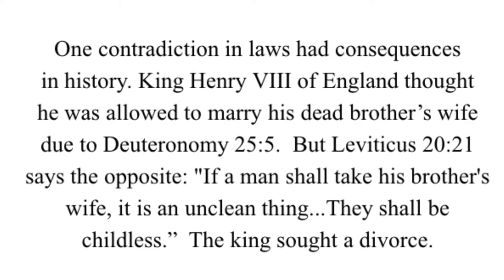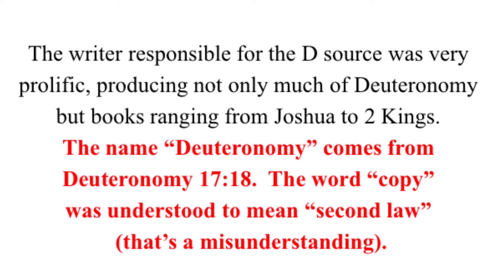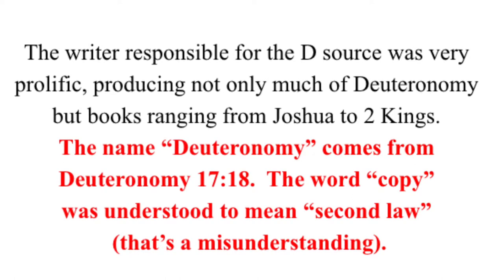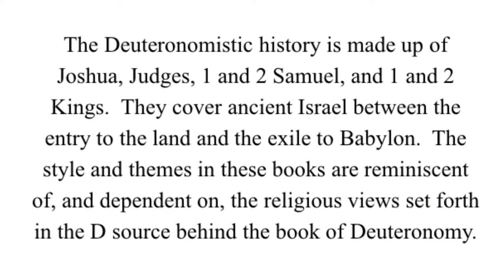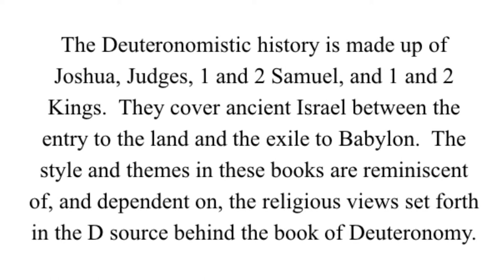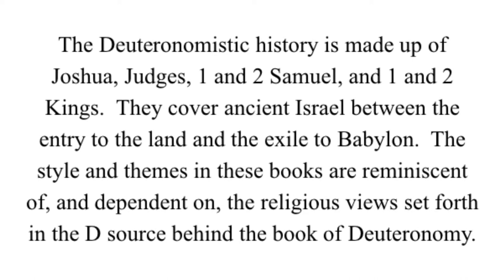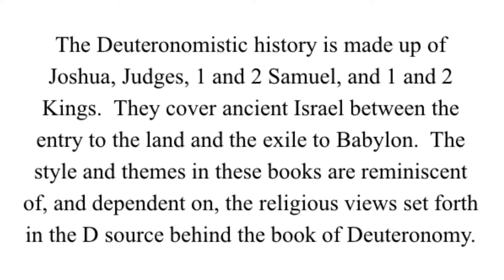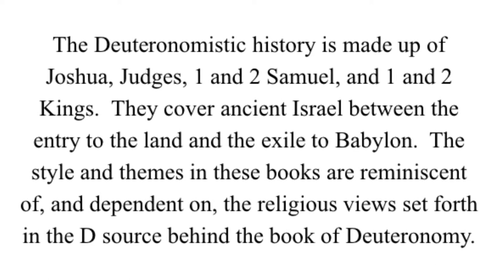The writer responsible for the D source was very prolific, producing not only much of Deuteronomy but books ranging from Joshua to the 2nd book of Kings. The Deuteronomistic history is made up of Joshua, Judges, the 1st and 2nd books of Samuel, and the 1st and 2nd books of Kings. They cover ancient Israel between the entry to the land and the exile to Babylon, and their style and themes are reminiscent of and dependent on the religious views set forth in the D source behind the book of Deuteronomy.